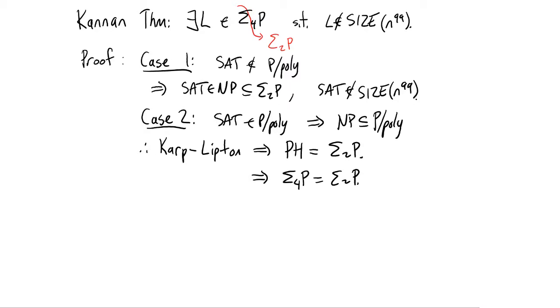And now we're done by Kannan's theorem, because we can simply take the language that Kannan constructs that's in sigma 4P, but not in size n to the 99, and say, well, in case two, sigma 4P is the same thing as sigma 2P. So the language in question is also in sigma 2P.